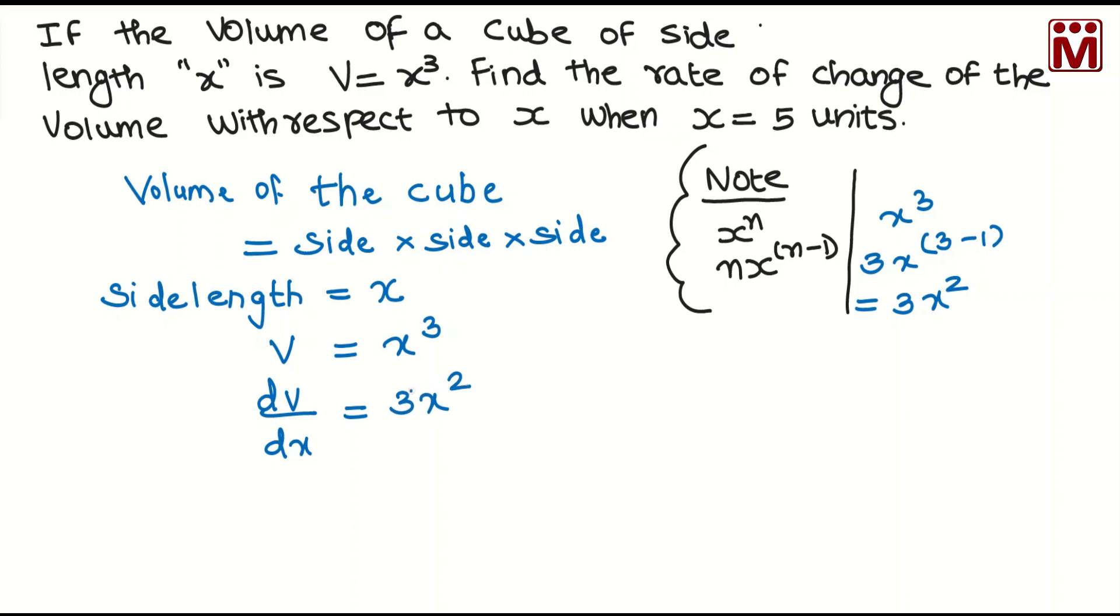Now, x is equal to 5 units. 3x square equal to 3 into 5 square, that is 3 into 25, so our answer is 75 units.